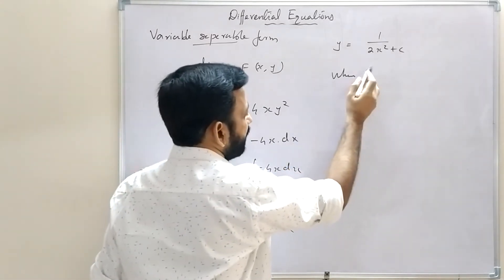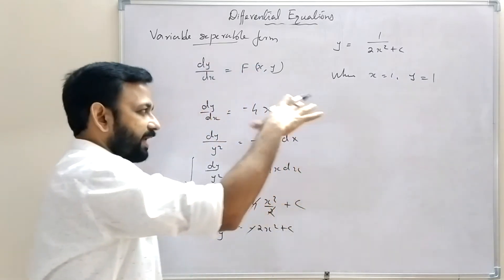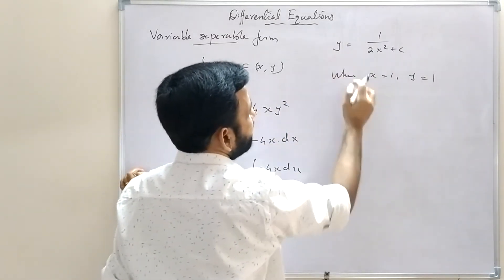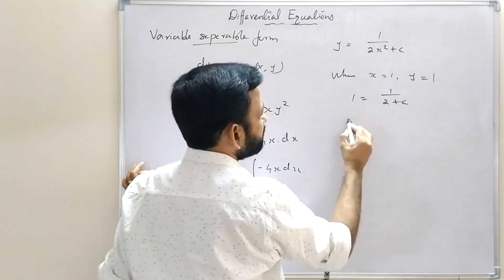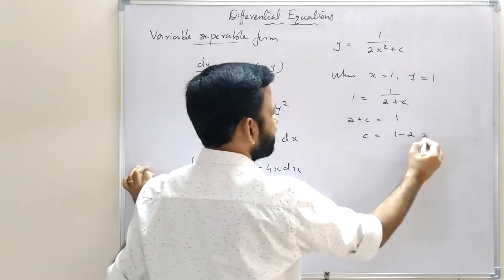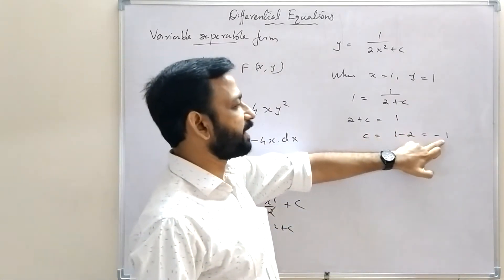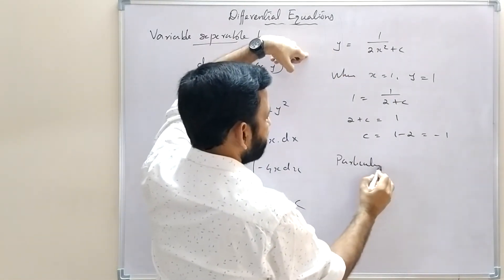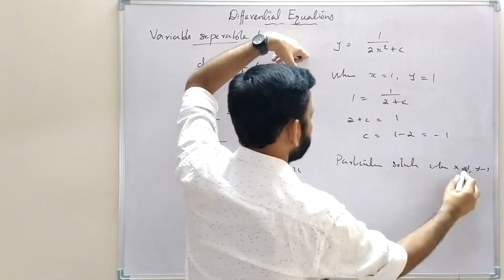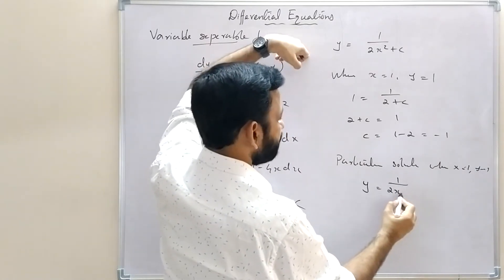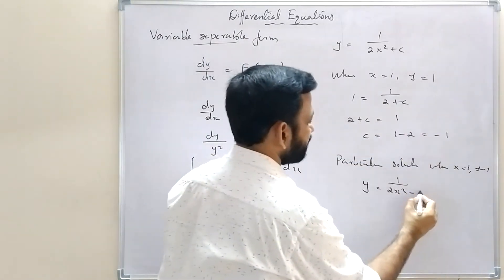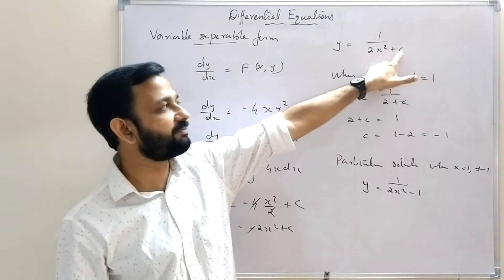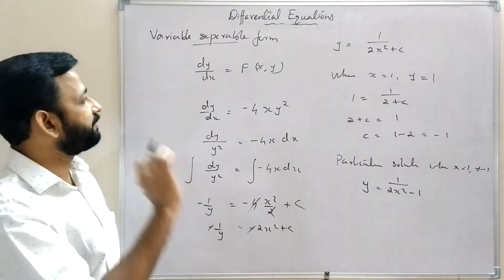Cross-multiplying: 2 + c = 1, so c = -1. Replacing c by -1 in the general solution gives the particular solution y = 1/(2x² - 1). In the general solution we have an arbitrary constant, but in the particular solution we do not. This is the variable separable form.